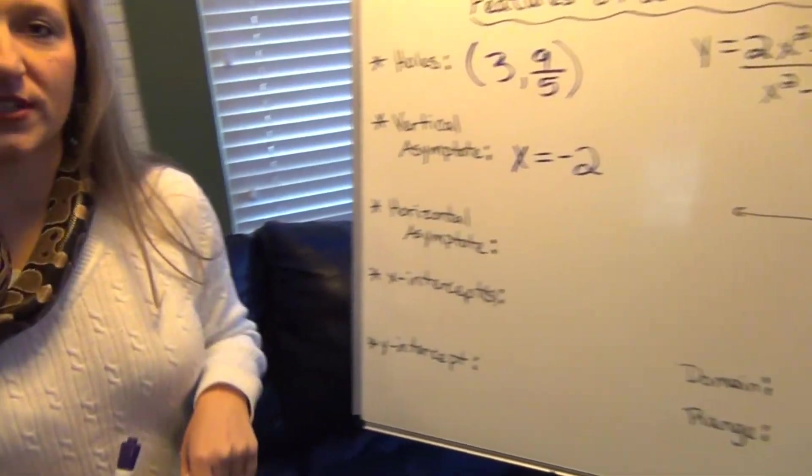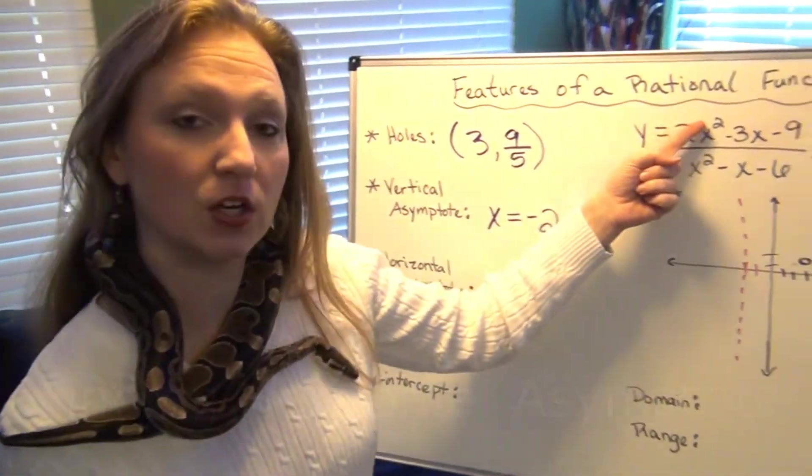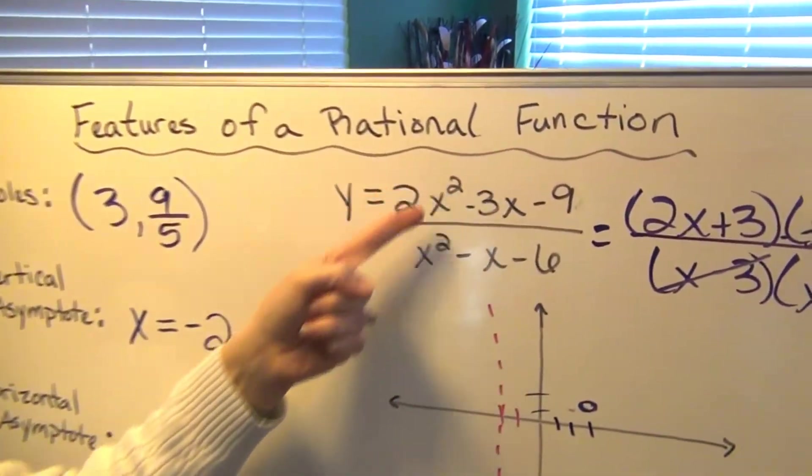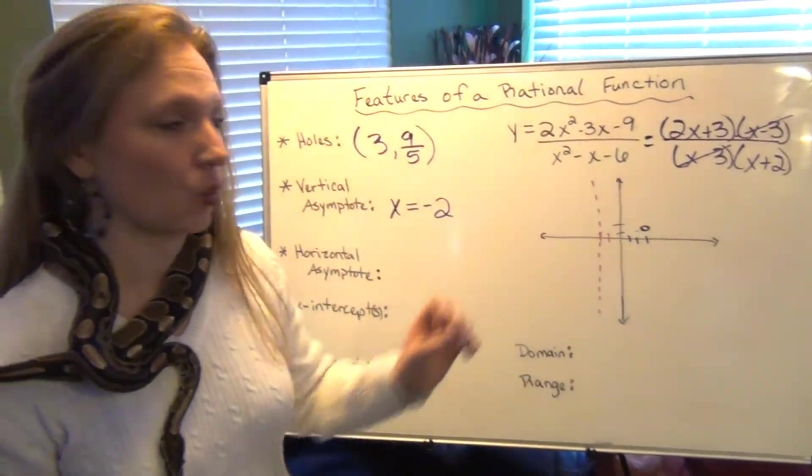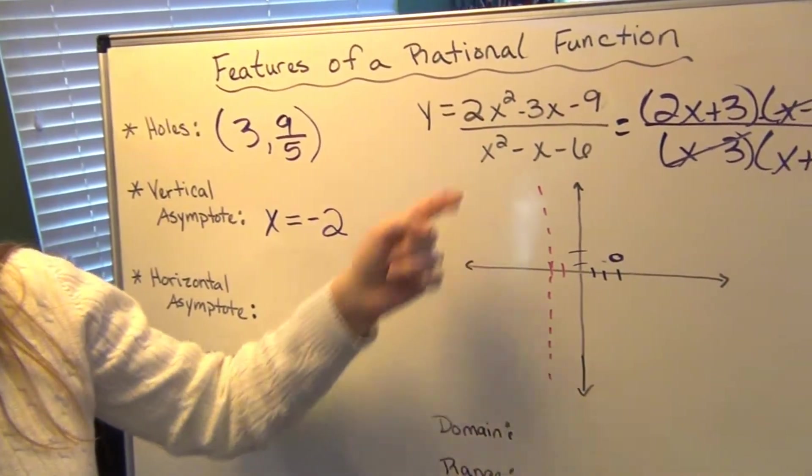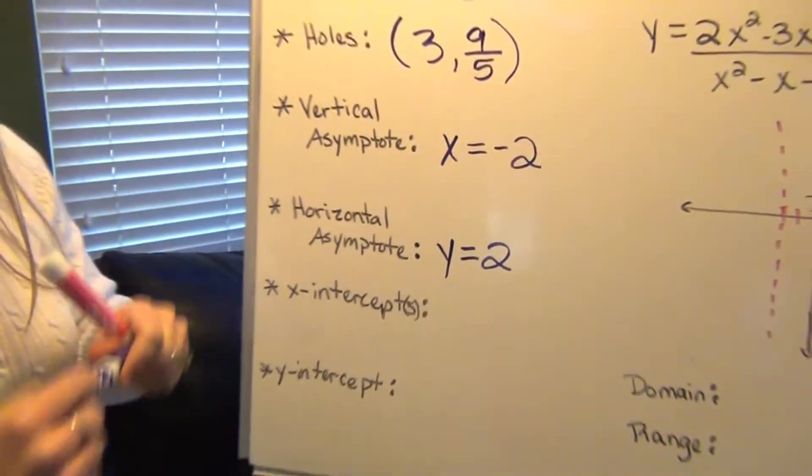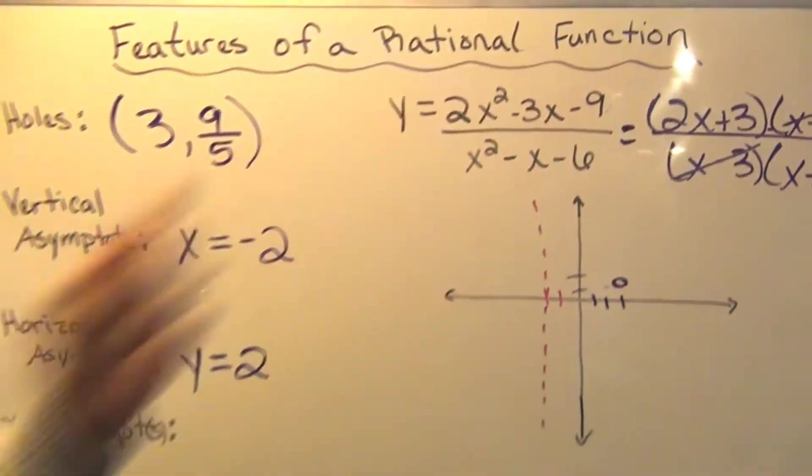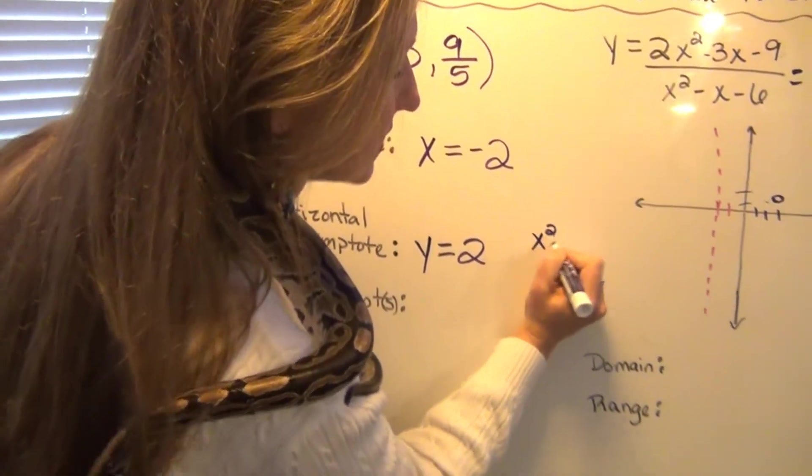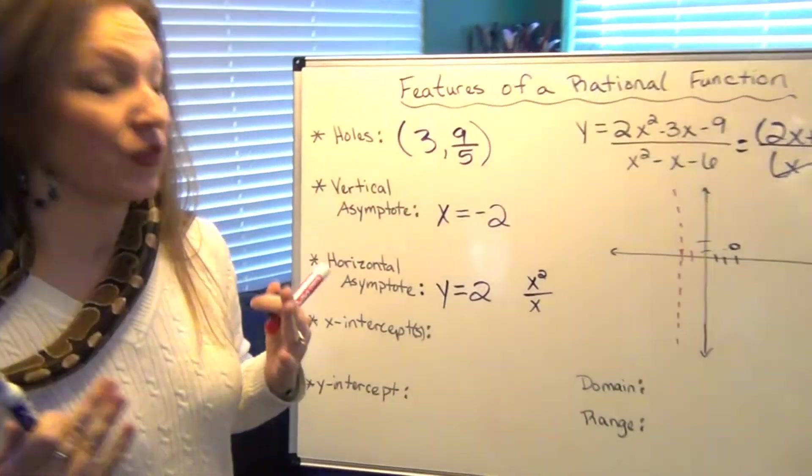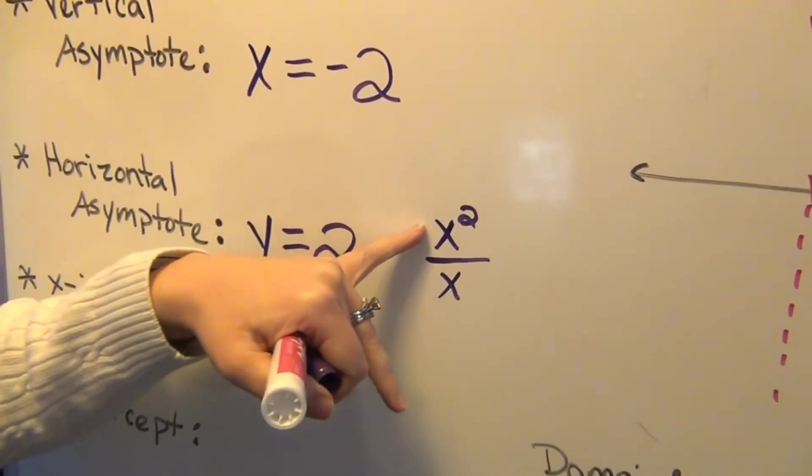Next part is to find the horizontal asymptote. There are three possible cases for a horizontal asymptote. So how we find the horizontal asymptote is we look at the degree of the numerator and we look at the degree of the denominator. We notice that both of the highest degree is 2 for these two polynomials. And so when they're the same degree, we divide the leading coefficient. So we're going to divide 2 by the 1 that's implied here, which tells us that we have a horizontal asymptote at y equals 2.